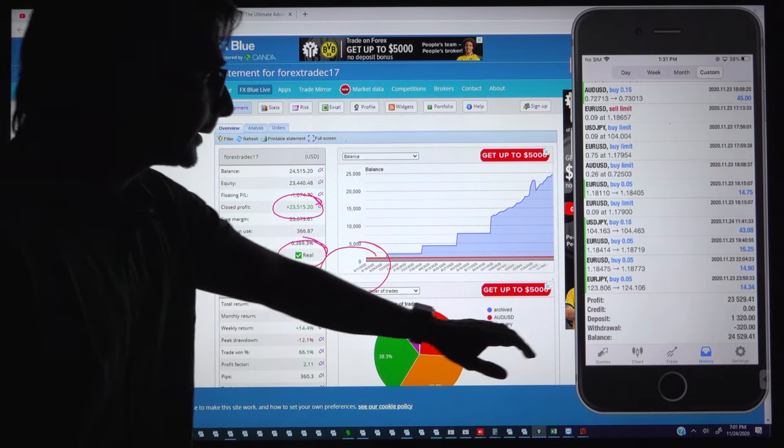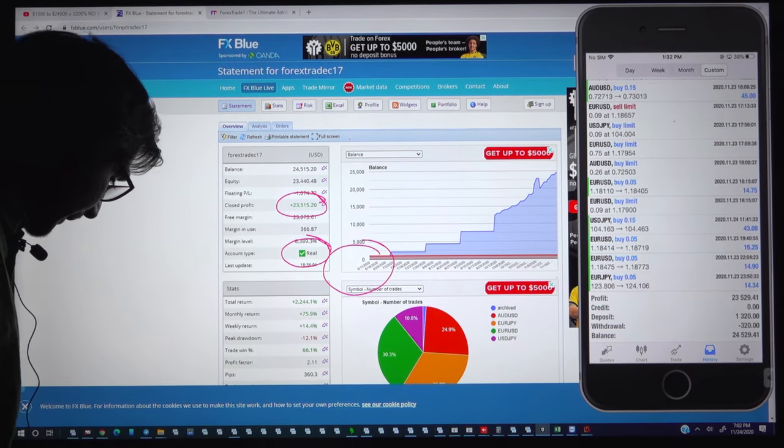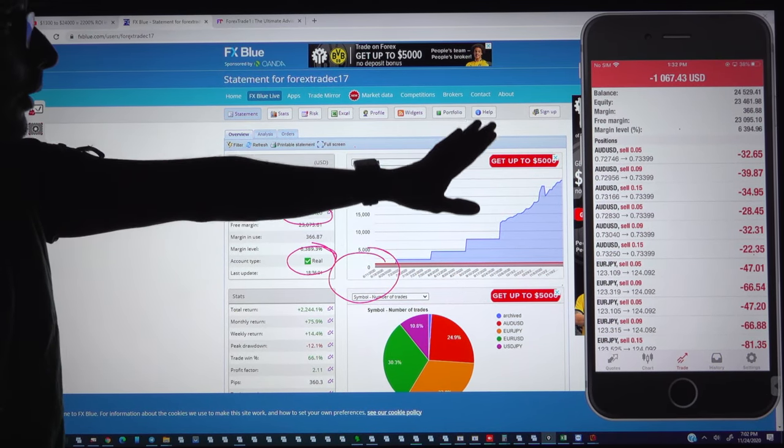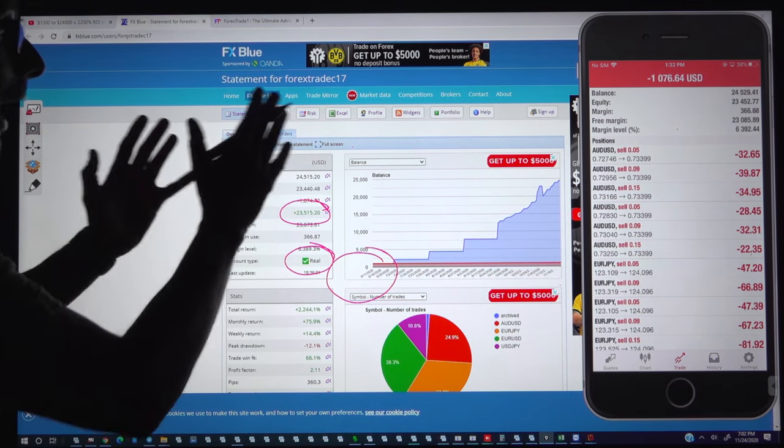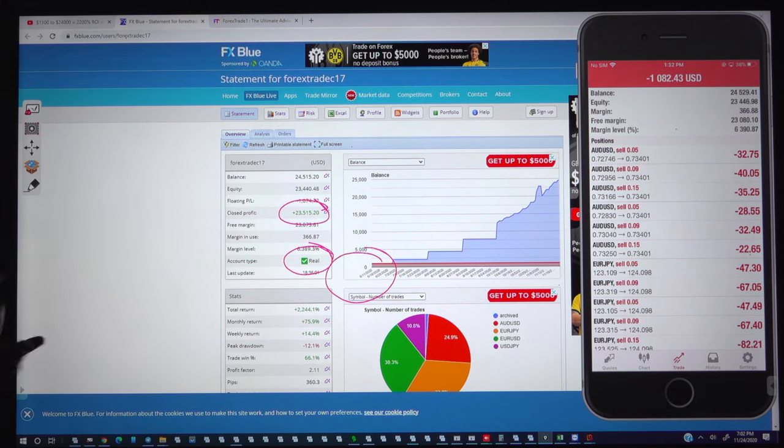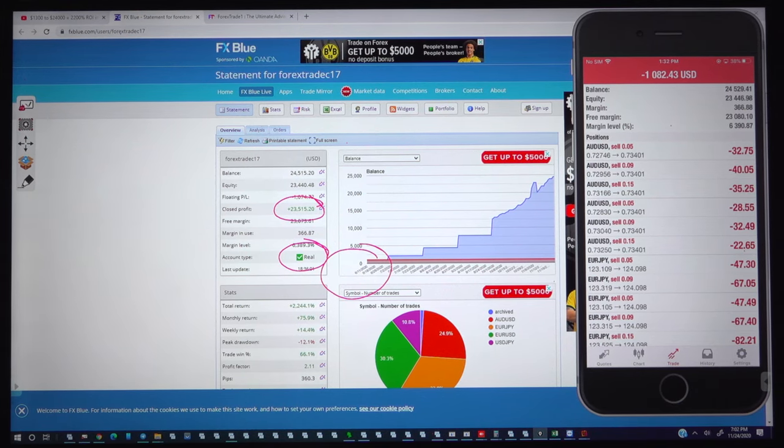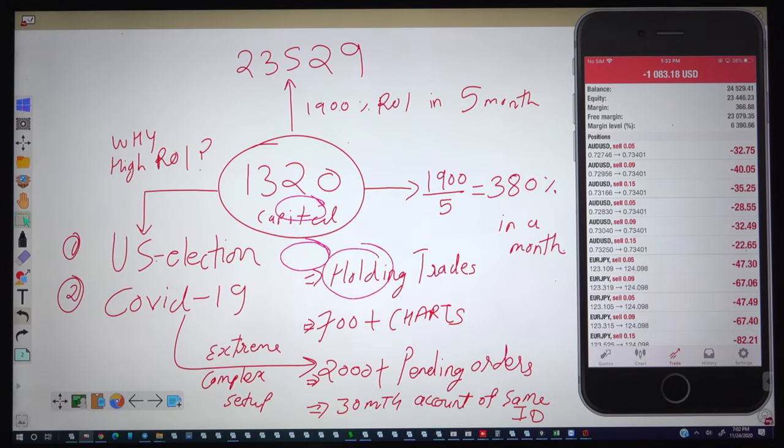We will go ahead with the further details. The same account, there are how many trades are open currently. There are few trades open as it is a 28 auto trading strategy we have applied here. And why these 1900 percent ROI we have achieved in 6 months? We are going to explain you these details also. Why in this account that much high ROI?